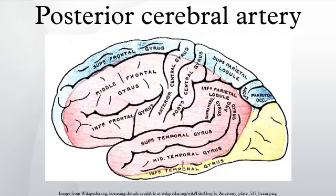The peduncular perforating, or posterolateral ganglionic branches, are small arteries which arise from the posterior cerebral artery after it has turned around the cerebral peduncle. They supply a considerable portion of the thalamus.